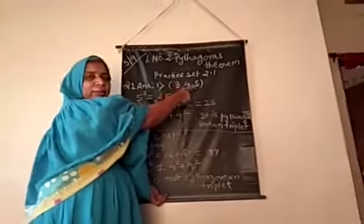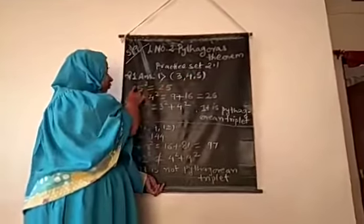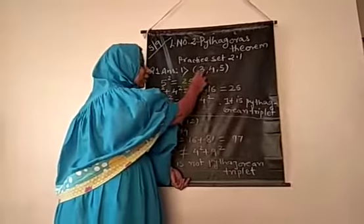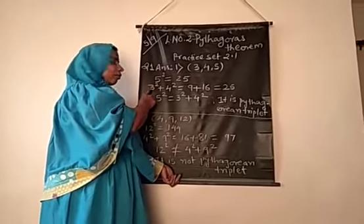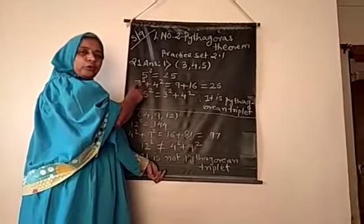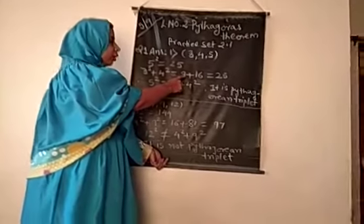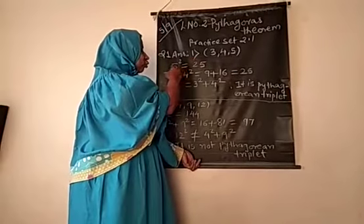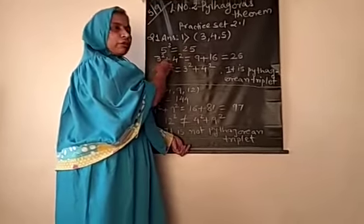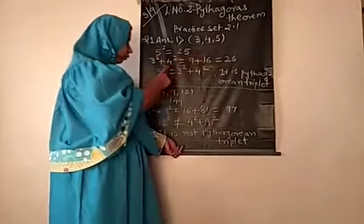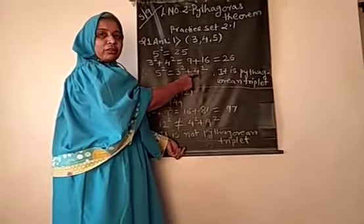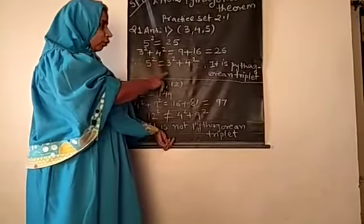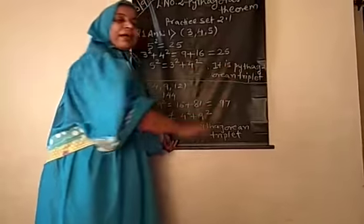In the triplet 3, 4, and 5 — 5 is the largest number, so 5 squared is equal to 25. The remaining numbers are 3 and 4, so we take the sum of their squares: 3 squared plus 4 squared equals 9 plus 16, which totals 25. Since both the LHS and RHS are equal, therefore the given 3 numbers are a Pythagorean triplet.